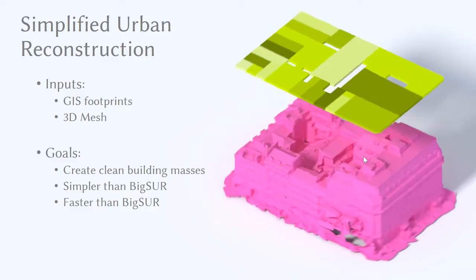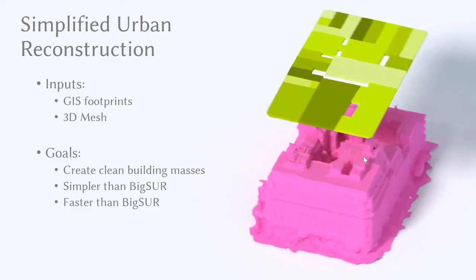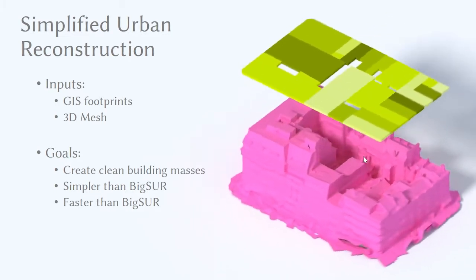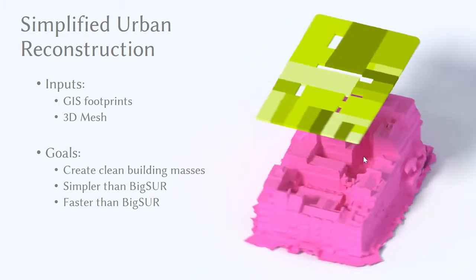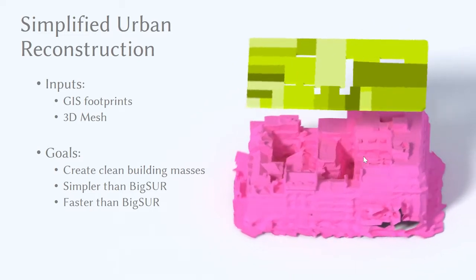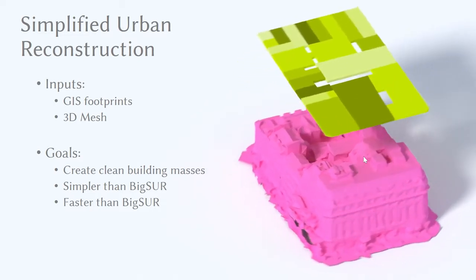Our simplified urban reconstruction pipeline takes only GIS data, here in green, and a 3D mesh, typically from a photogrammetric source, and the goal is to create a clean building mass that is simpler and faster than the existing Big Sur system.